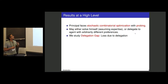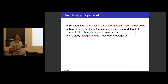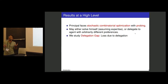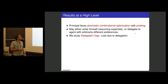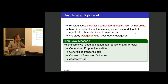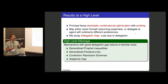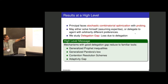At a high level, the principal faces what we call a stochastic combinatorial optimization problem with probing. He may either solve this problem himself, assuming he has the expertise, or delegate solving it to an agent with arbitrarily different preferences — or rather, he delegates the data exploration, the probing portion. We study the delegation gap: how much you lose by delegating rather than solving it yourself. The high-level message of the two papers is that designing mechanisms with good delegation gap reduces to familiar tools from stochastic selection and optimization — tools like profit inequalities, Pandora's box algorithms, contention resolution schemes, and adaptivity gaps.